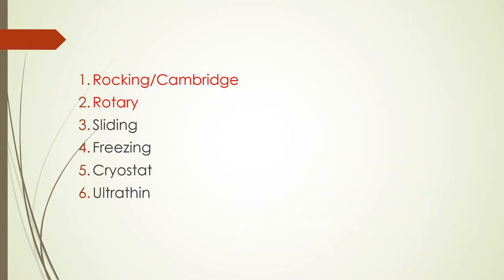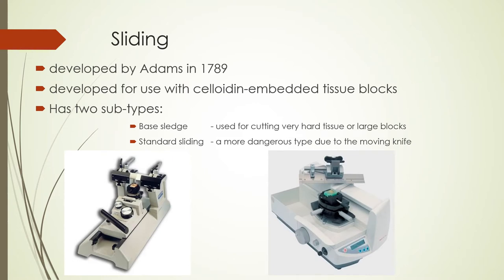Next we have the sliding microtome. It was invented by Adams in 1789, making it older than the rocking and rotary microtomes. It was developed for use with celloidin-embedded tissue blocks and has two subtypes: the base sledge and the standard sliding. The base sledge microtome is used for cutting very hard tissues or large blocks.